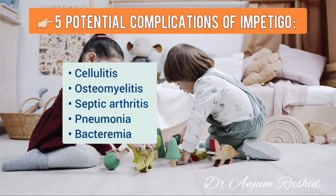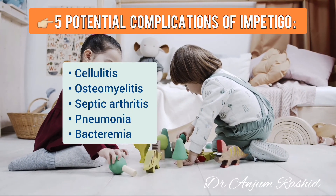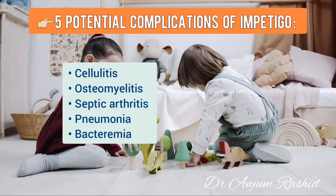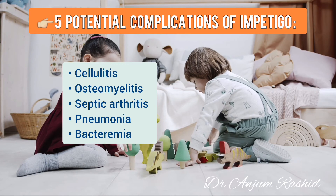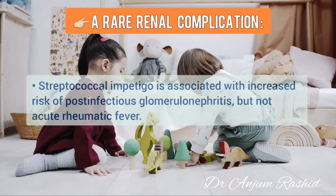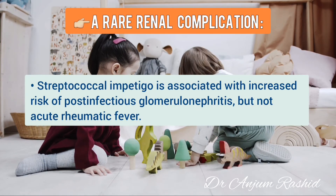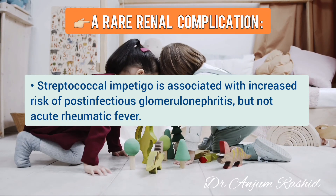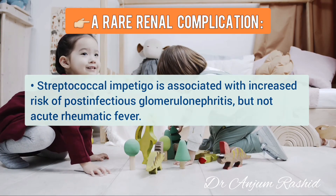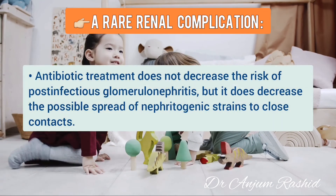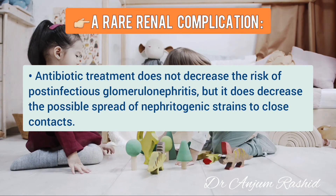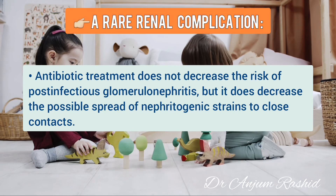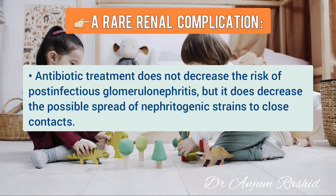Now there are five important potential complications of impetigo. These include cellulitis, osteomyelitis, septic arthritis, pneumonia, and bacteremia. Streptococcal impetigo is associated with increased risk of post-infectious glomerulonephritis, but not acute rheumatic fever. Antibiotic treatment does not decrease the risk of this post-infectious glomerulonephritis, but it does decrease the possible spread of nephritogenic strains to close contacts.